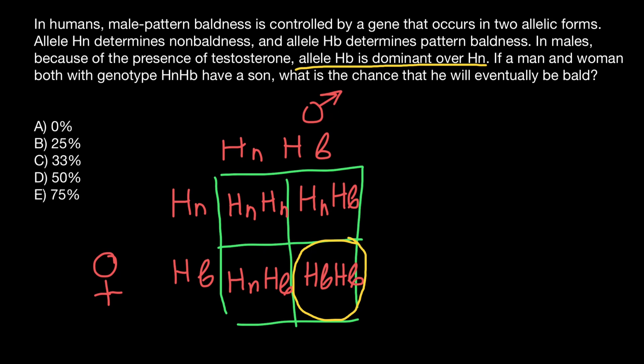What about these two people? These two people are heterozygous because they have both allele HN and HB. And because allele HB is dominant over HN, this genotype will also manifest itself as pattern baldness.